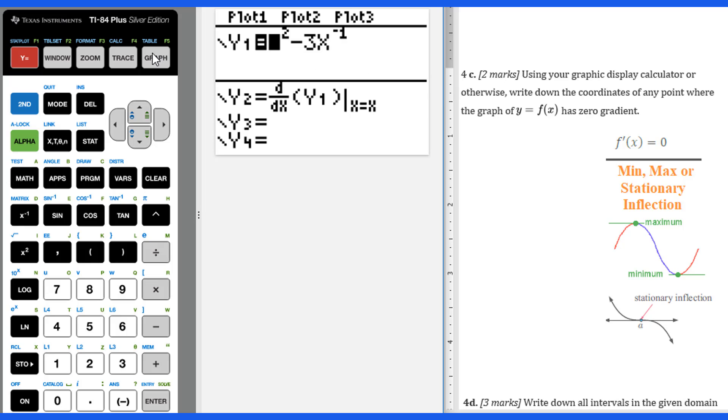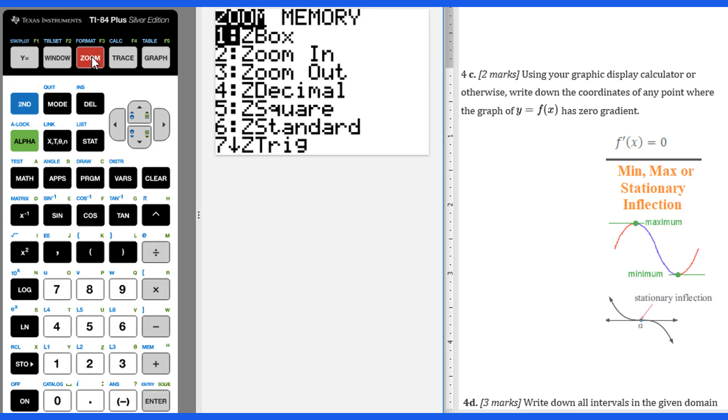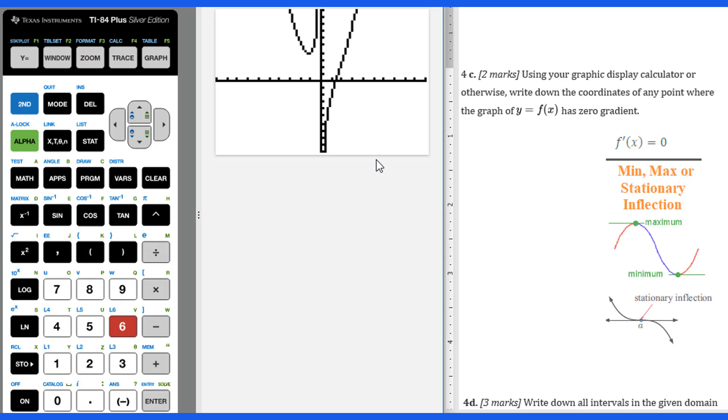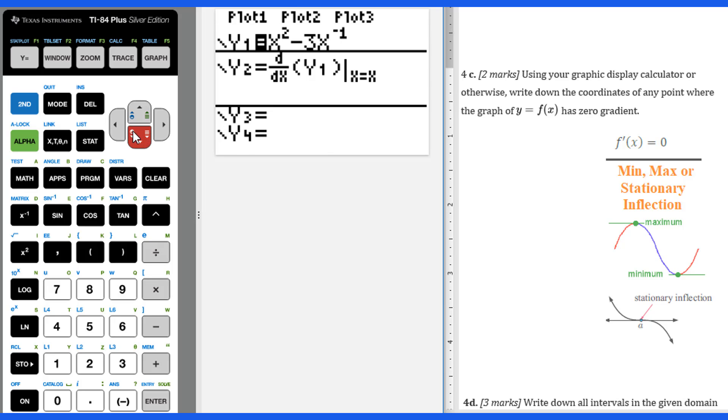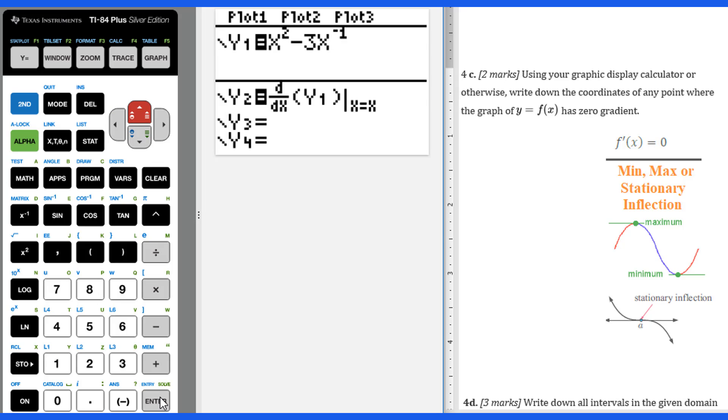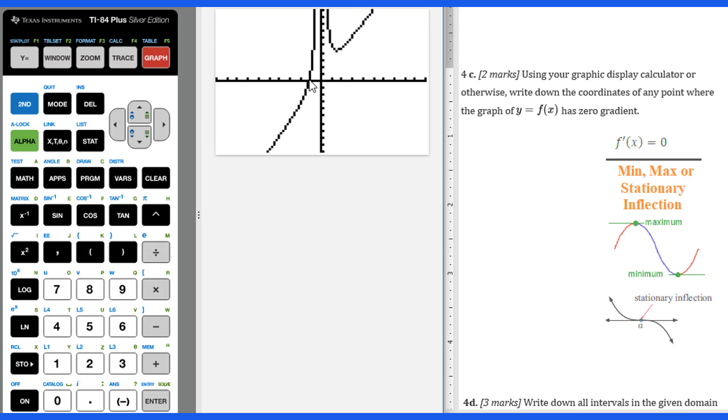I want the window as standard, so I do zoom 6, go to standard. This is what my graph looks like, and I don't know if this one will be a stationary inflection or not. So I go to y equals, let's check y2. I graph y2. Y2 is the derivative, so let's check at how many points the first derivative equals zero. Only one point.